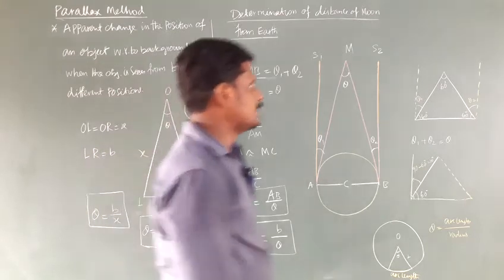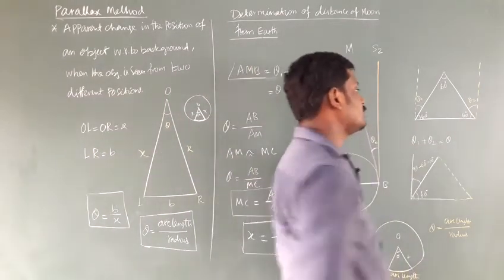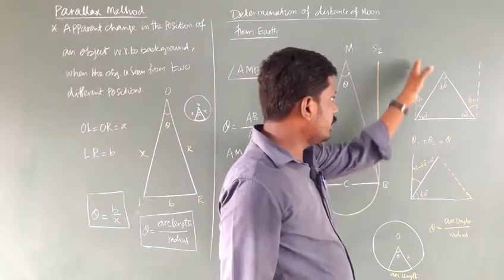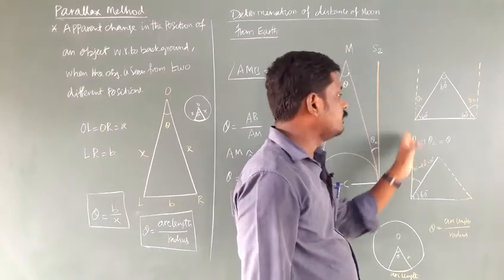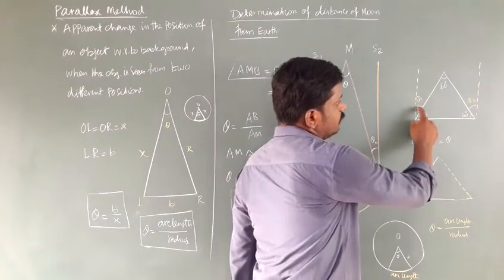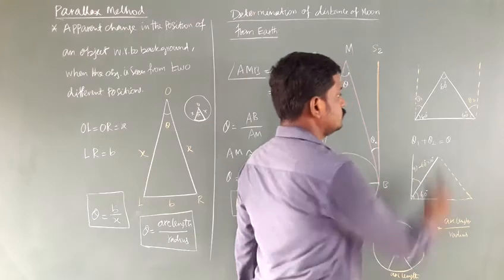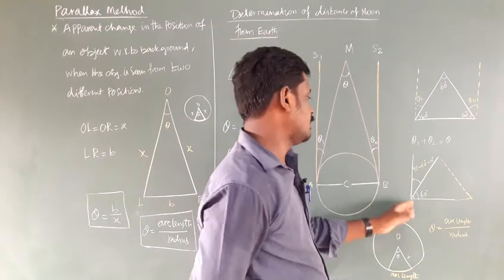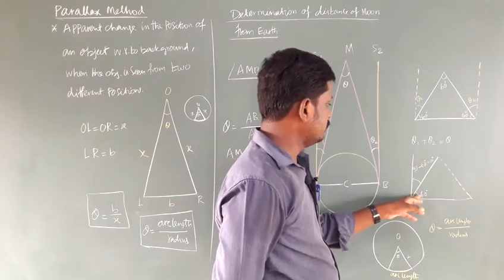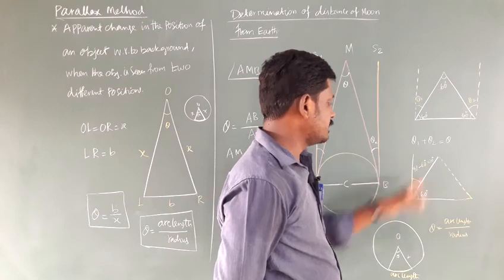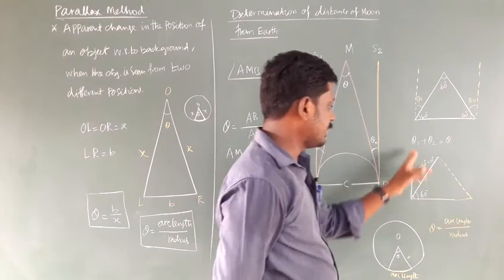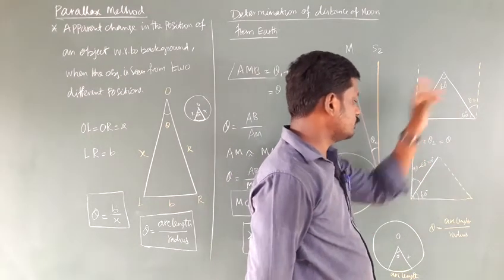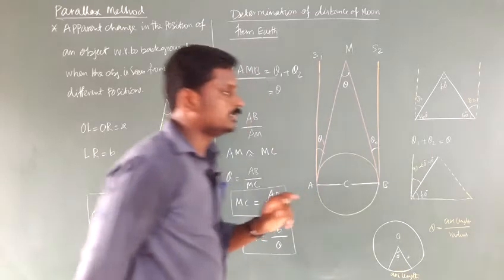It is an equilateral triangle — all sides are equal, so all angles are 60 degrees and the sum of angles is 180 degrees. Now draw a perpendicular line to the base: one part is theta1 and the other is theta2, so theta1 plus theta2 equals theta. The base angle is 60 degrees, so 90 minus 60 equals 30 degrees. Since it is perpendicular it makes 90 degrees with the base, so 30 plus 30 equals 60 degrees, confirming theta1 plus theta2 equals theta.